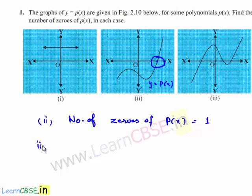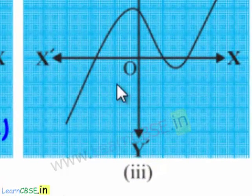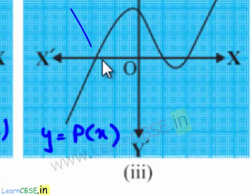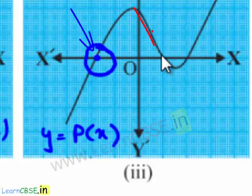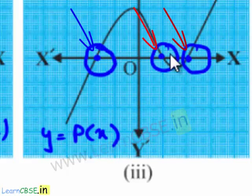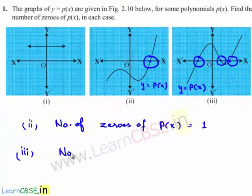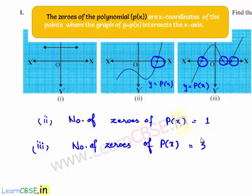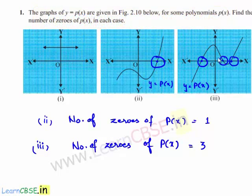Coming to the third graph, the graph y equal to p of x is intersecting the x-axis at three points — this is one point, this is one, and this is another. So by definition, the number of zeros of p of x is equal to three, since the graph is intersecting the x-axis at three points.